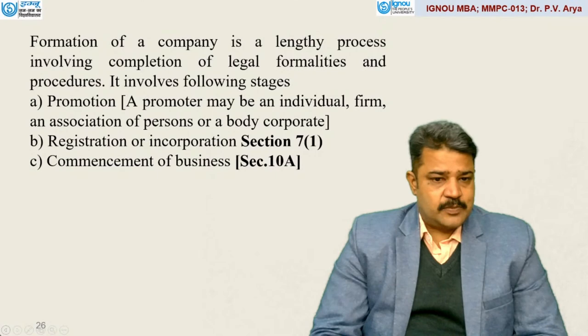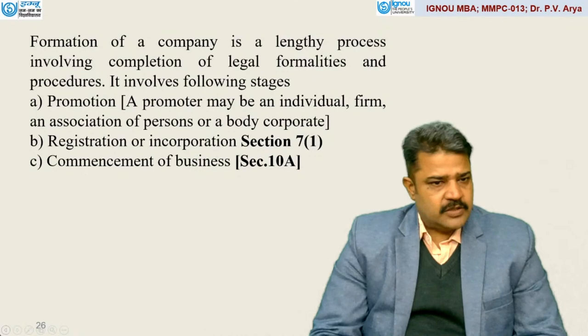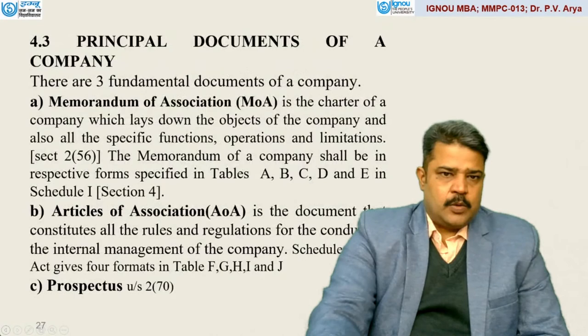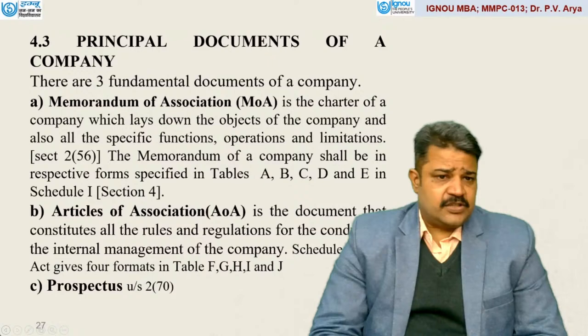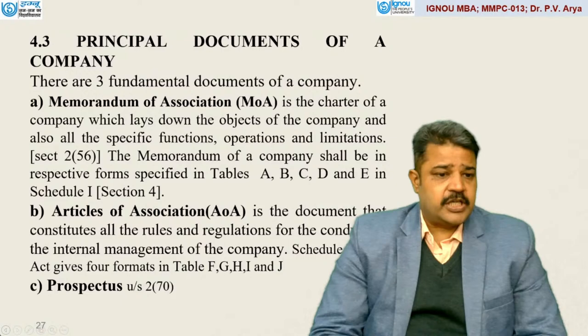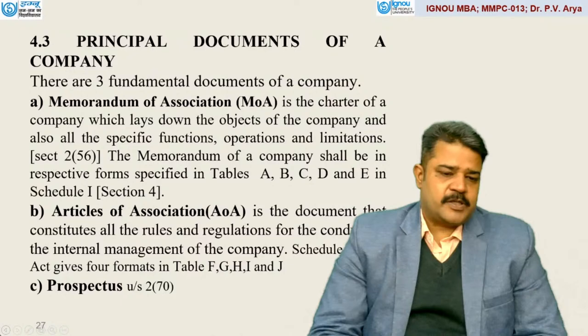Registration is a process under Section 7, Subsection 1, which gives the idea of registration of company, and subsequently commencement of business under Section 10A. The principal documents of a company involve basically three fundamental documents: one is MOA — Memorandum of Association, second is Article of Association, and the third one is prospectus under Section 2, Subsection 70.